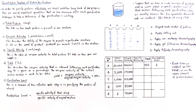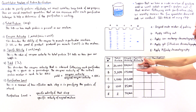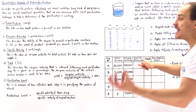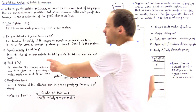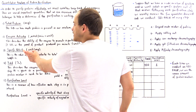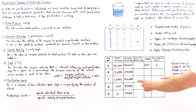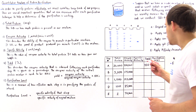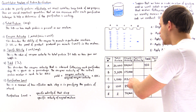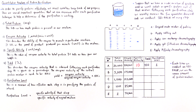Now let's calculate the specific activity to determine whether these steps are actually working. The specific activity is the ratio of the enzyme activity to the total protein in our sample. So 200,000 divided by 20,000 gives us a value of 10 — the four zeros cancel, we get 20 divided by 2, which equals 10. Now that we have all five values for step A, we can proceed.